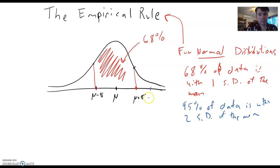95, so let's see, here's the mean plus two standard deviations, mean minus two standard deviations. So we're saying if we look at this region here, much larger region, then that's going to be 95% of the data.